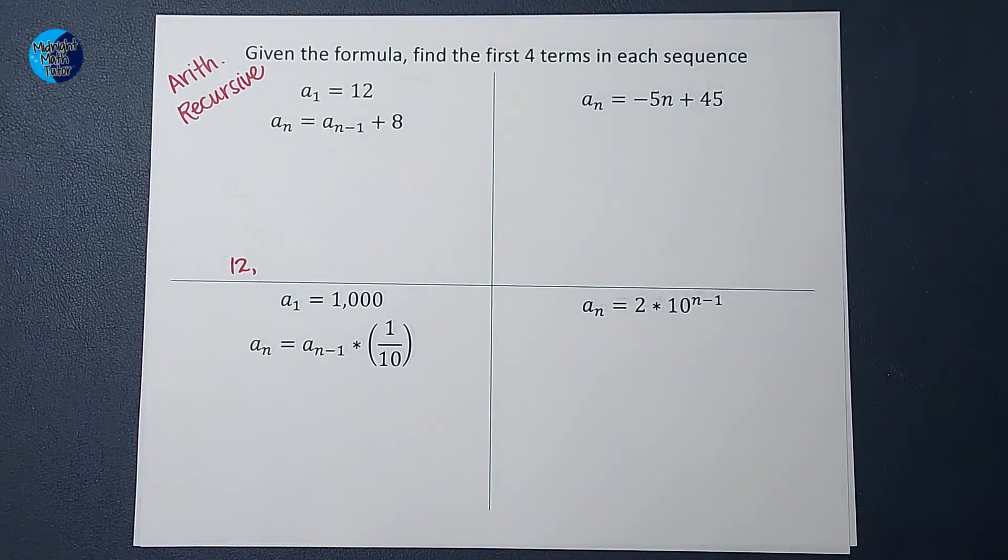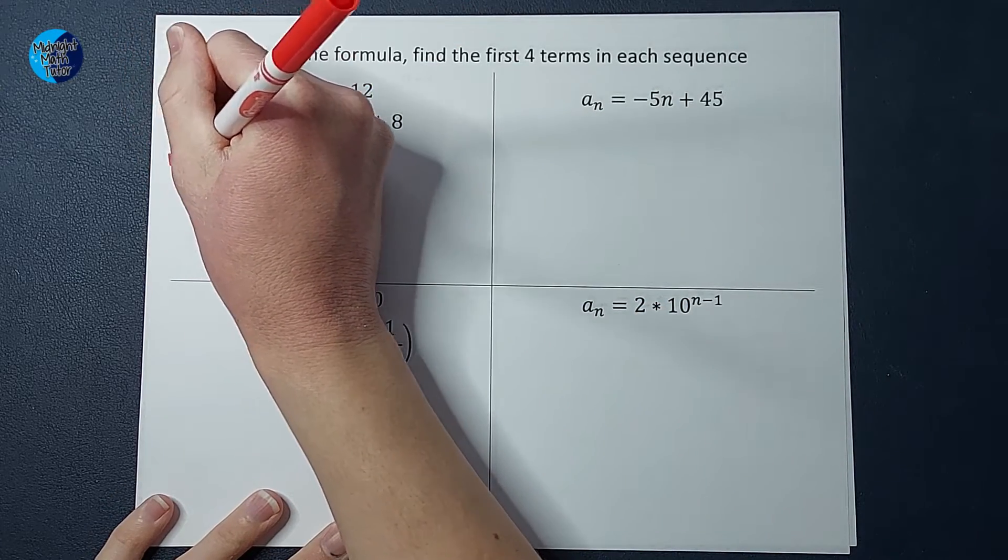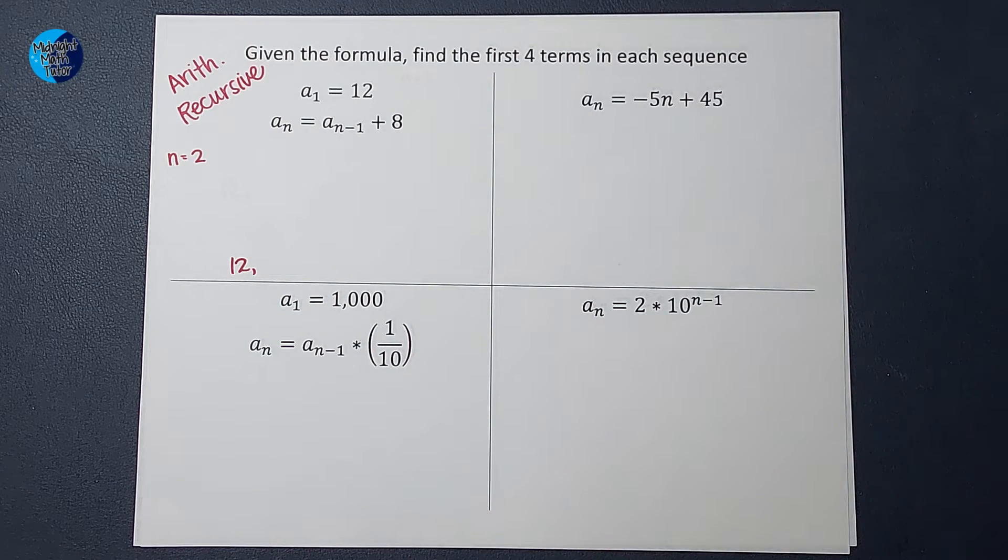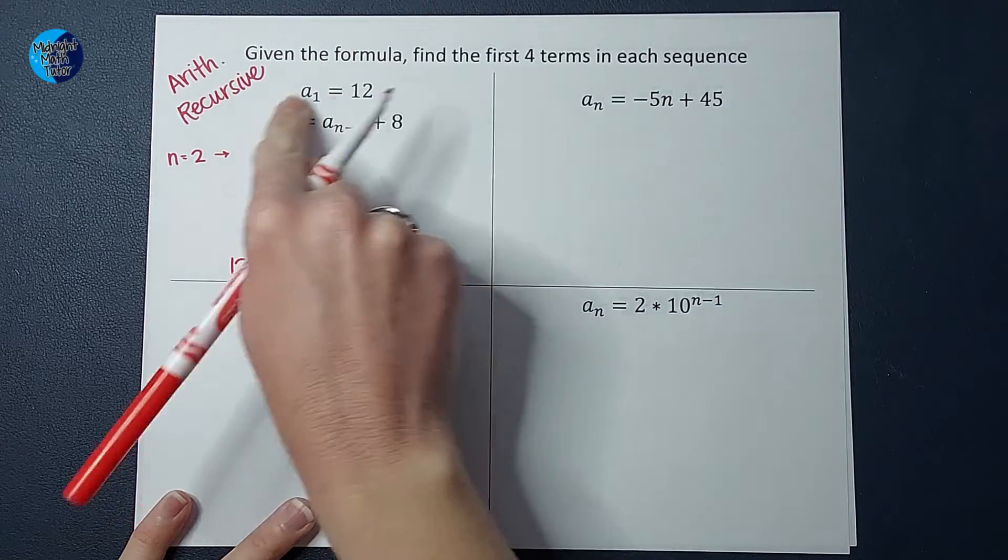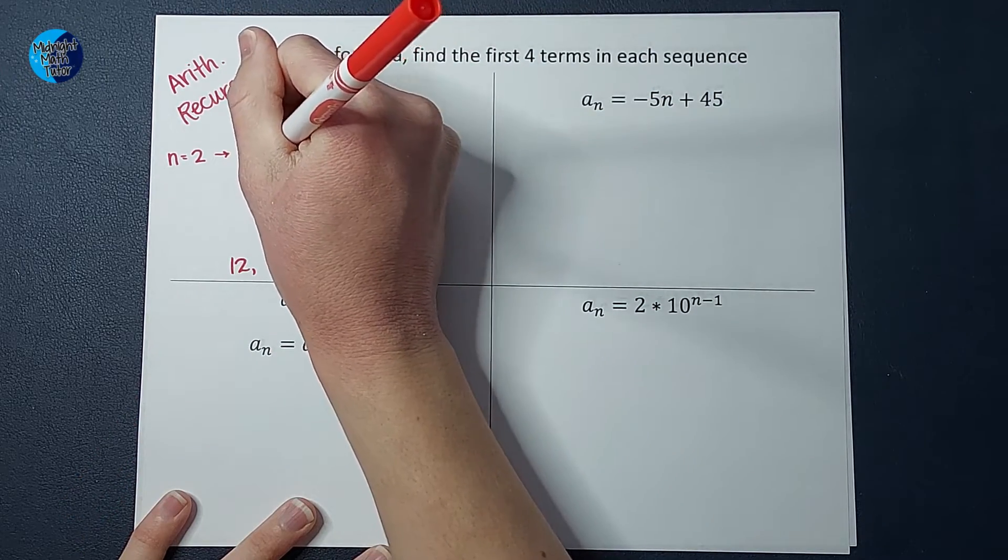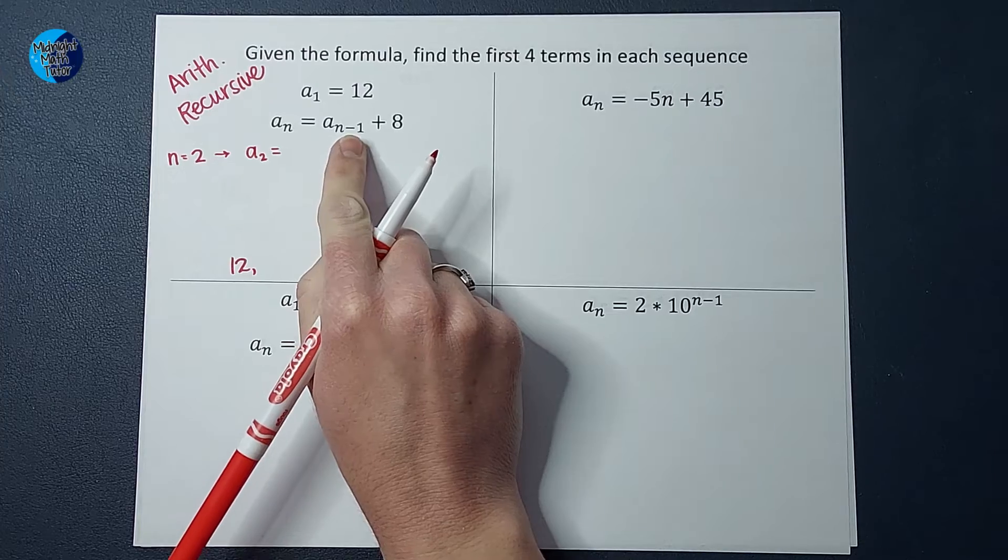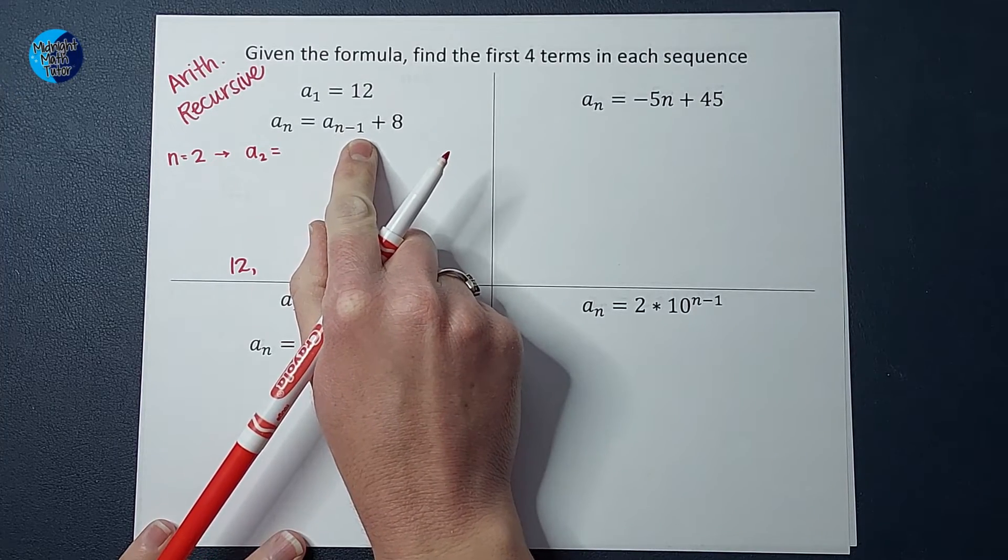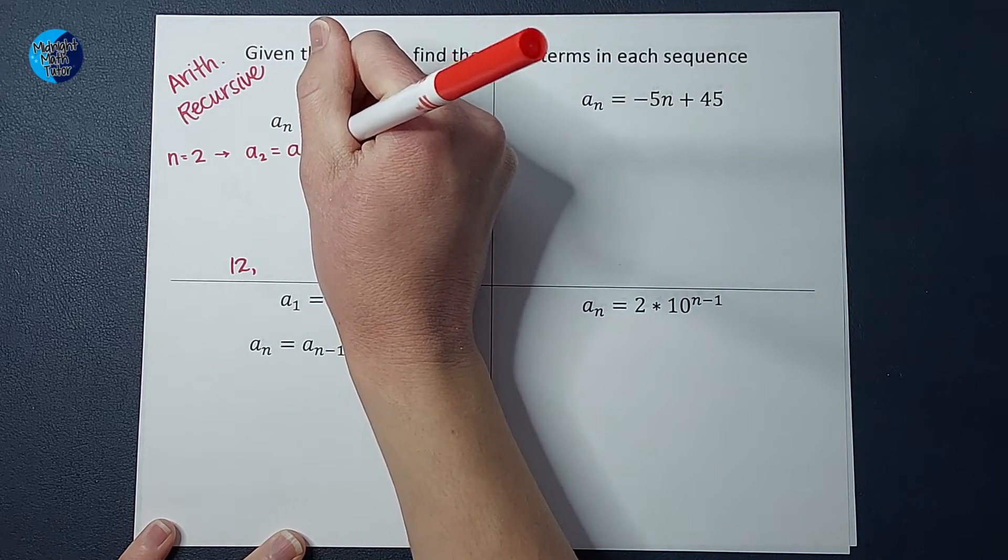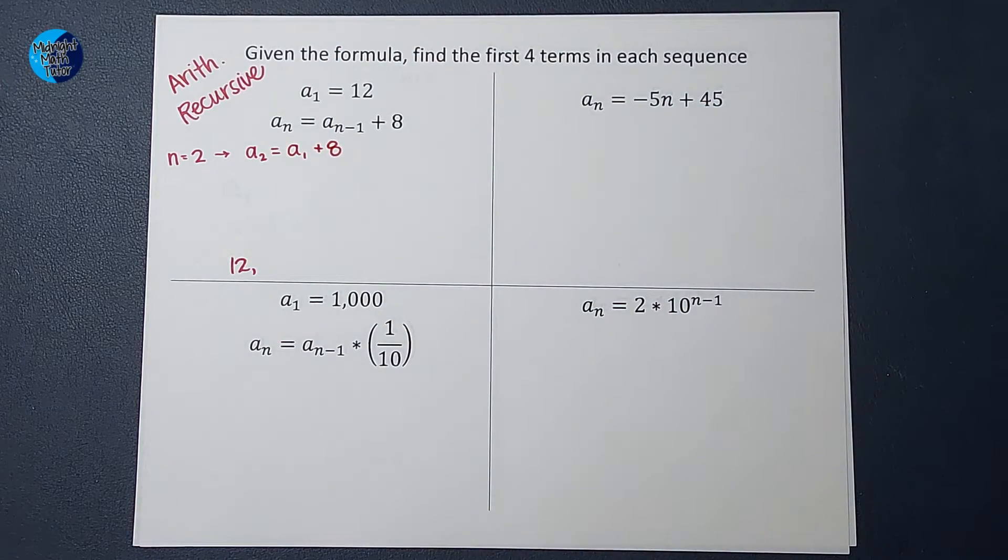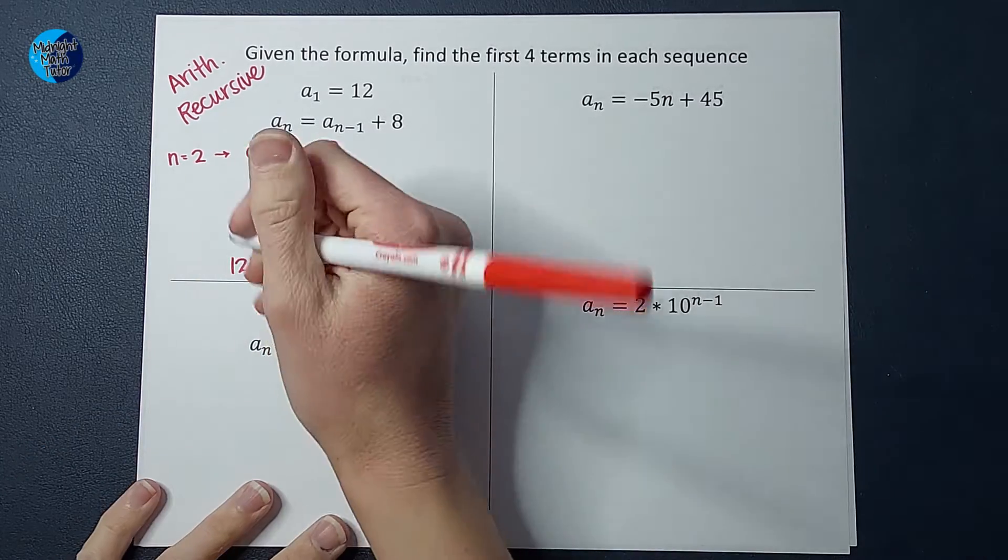But how do I find the rest? Well, I want to know the second term. So that is where n equals 2. N refers to the place. So I want to know where n equals 2. So to find that, I'm going to plug in here. So a sub 2, the second number in my sequence, is equal to a sub n minus 1. So 2 minus 1, which is 1. So a sub 1 plus 8. So that just means we take a sub 1, 12, and add 8 to it. So 12 plus 8 gives me 20.